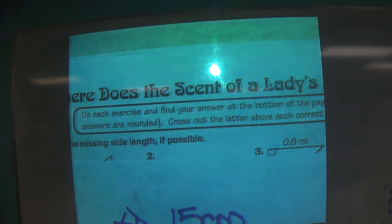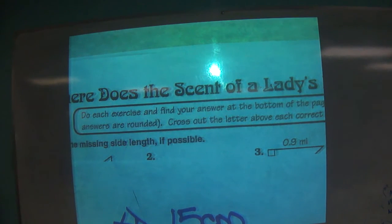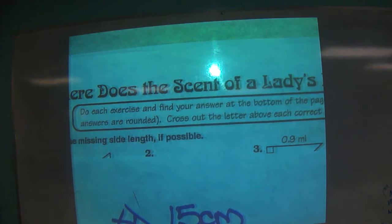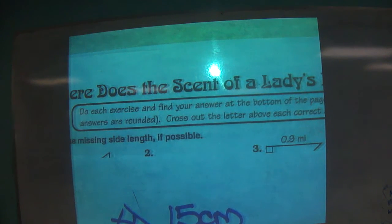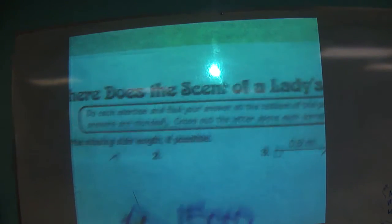Okay, where does the scent of a lady's perfume go? So this is number two. You can tell which side is the hypotenuse because the legs, or A and B, are always right next to the right angle.